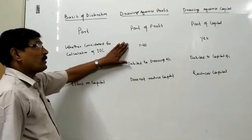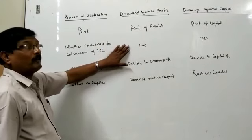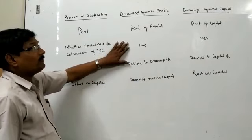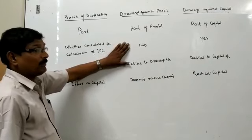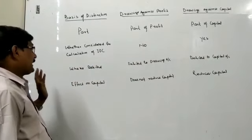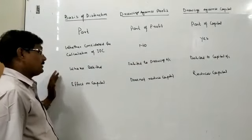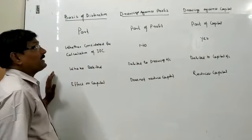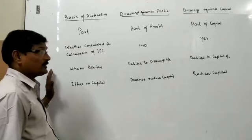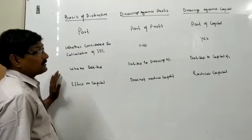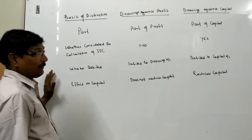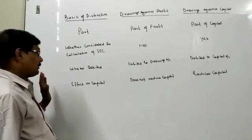The second basis is whether it is considered for calculation of interest on capital (IOC). In the case of drawings against profit, interest on capital will be calculated on the total capital. But in the case of drawings against capital, the withdrawn amount is deducted while calculating the interest.